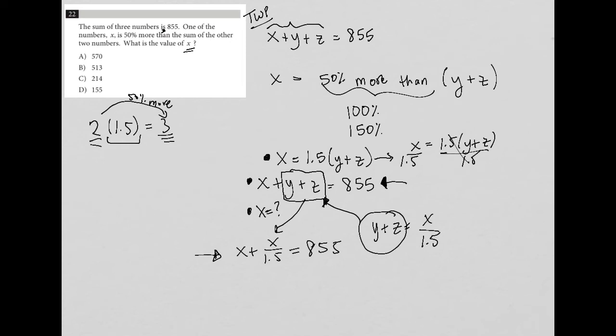To combine like terms, notice my new equation only has variable x, which means I'm on the right track. I'll call this x over 1. To combine like terms, I need a common denominator. I'll multiply by 1.5 on top and bottom, giving me 1.5x over 1.5 plus x over 1.5 equals 855.